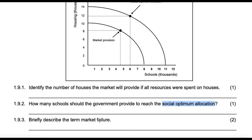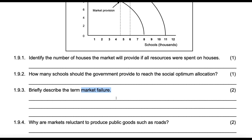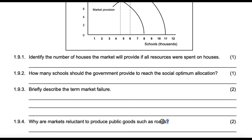Then: briefly describe the term market failure. It's the failure of markets to allocate resources at an optimum level. Then: why are markets reluctant to produce public goods like roads? Roads are non-excludable and also non-rivalry. Markets will not produce them because there's no way to make money from something that's non-excludable — free riders would just use them. Imagine if burgers were non-excludable; McDonald's wouldn't produce them. That's why McDonald's makes burgers, which are excludable, and not roads, which are not.